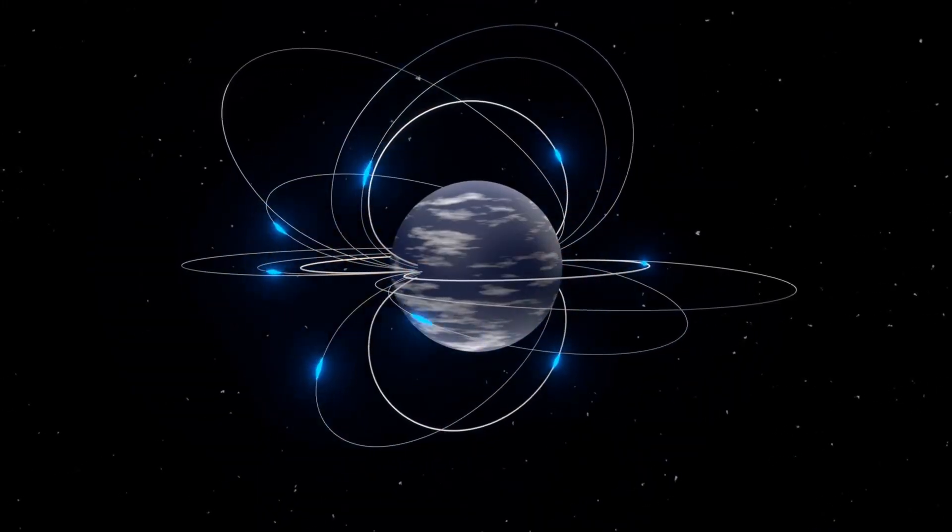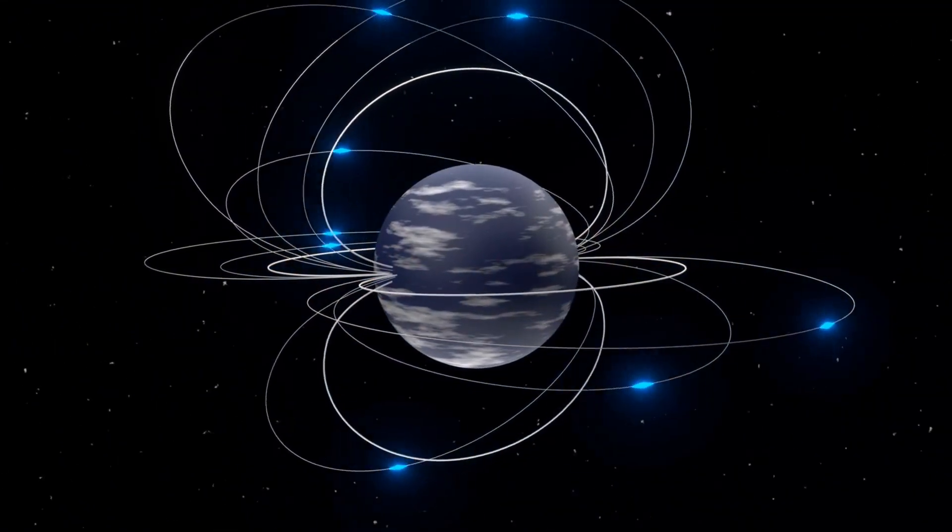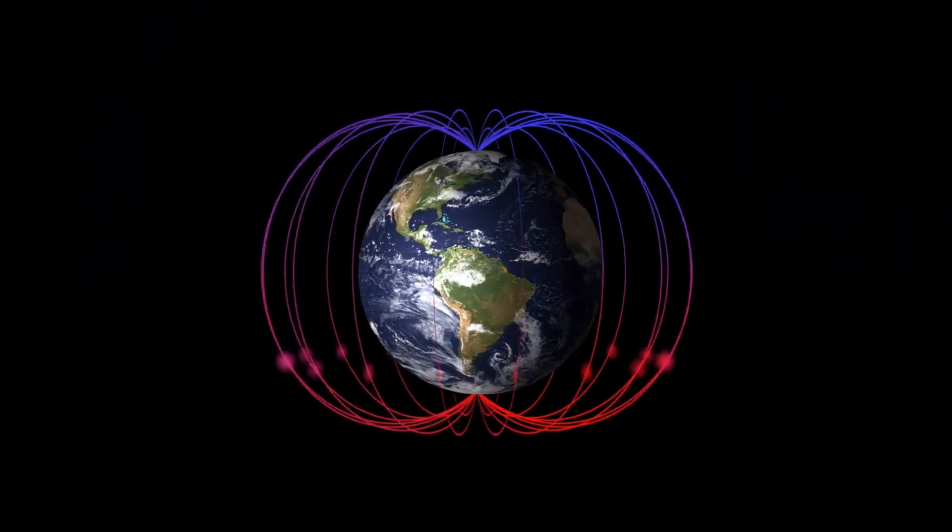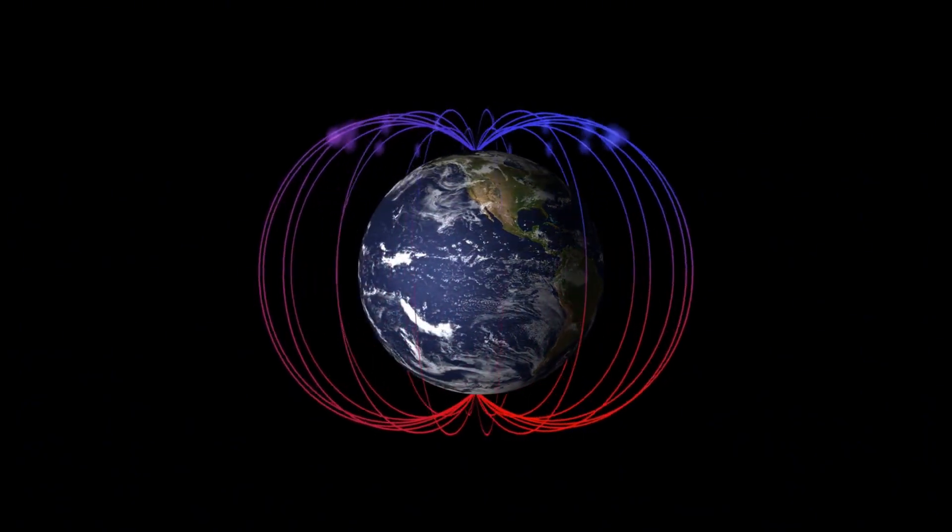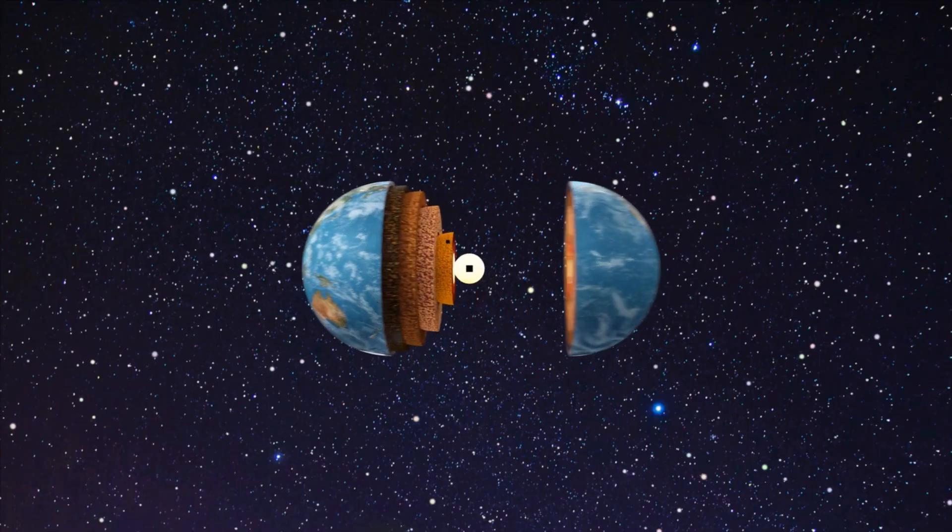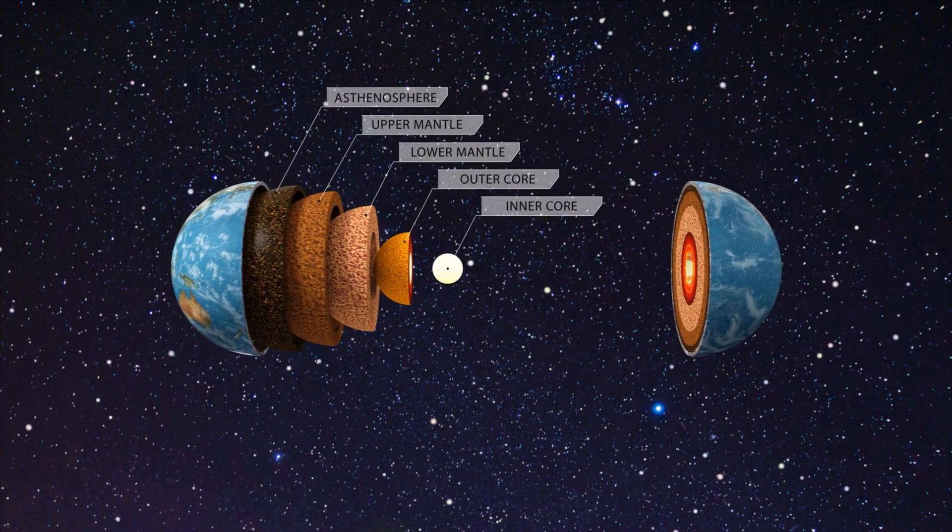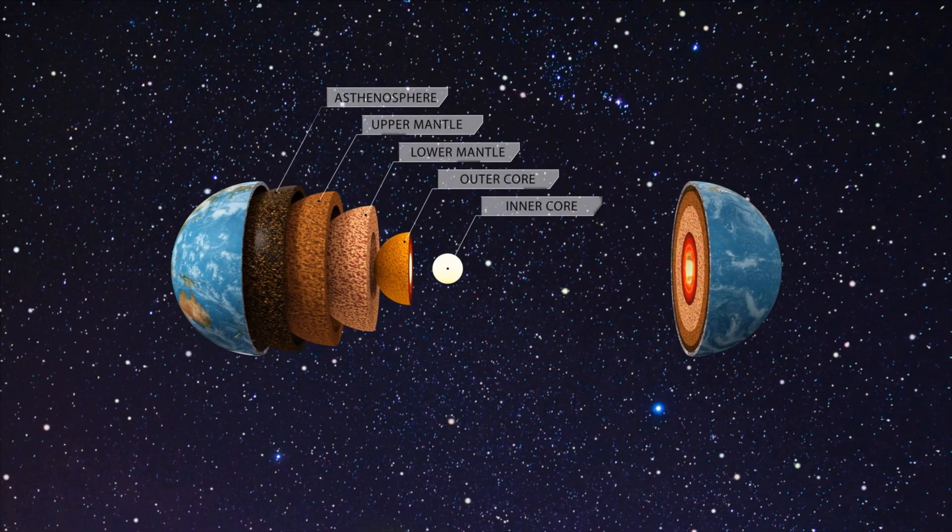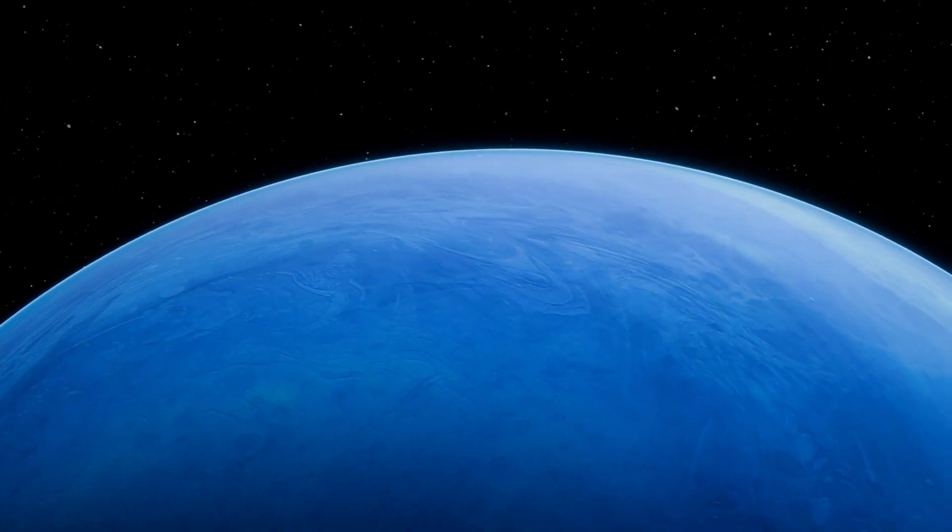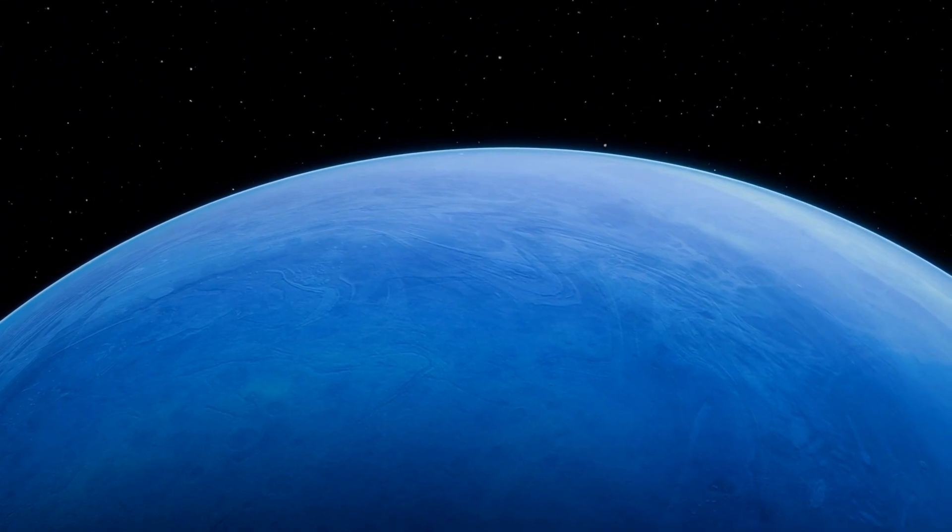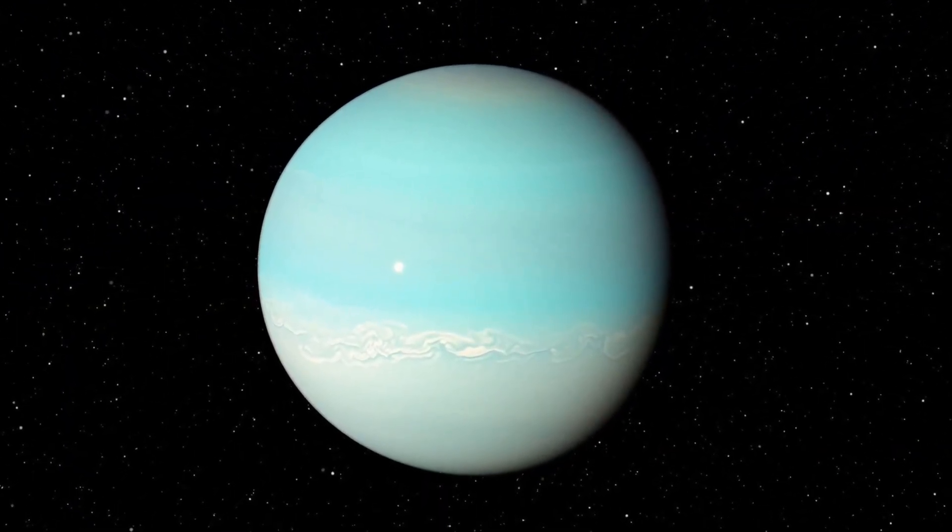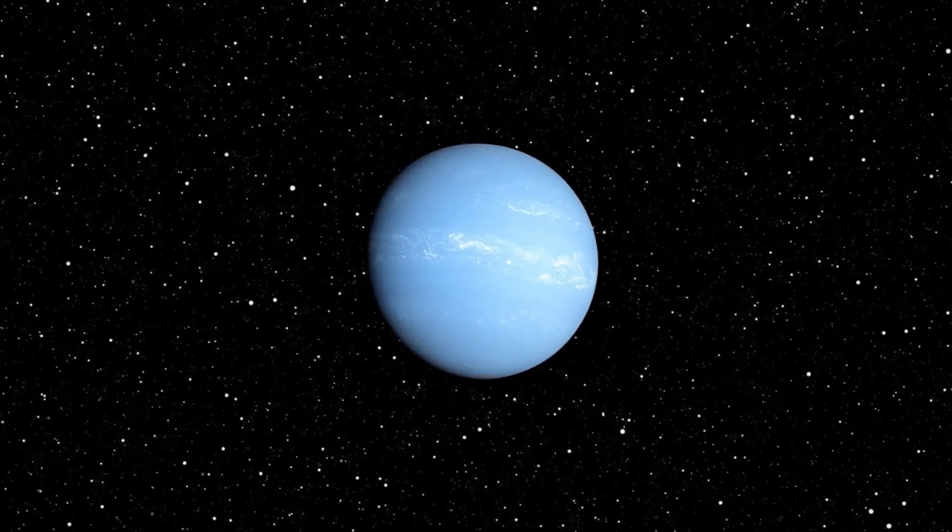And then there's the planet's magnetic field, perhaps the most confounding of all. Unlike Earth's relatively stable, centered field generated by its spinning iron core, Neptune's magnetic field is tilted 47 degrees from its axis and doesn't even pass through the planet's center. What's more, it fluctuates wildly. New observations show the field's strength and structure shift over time. Sections pulse, drift, and vanish in rhythmic cycles.